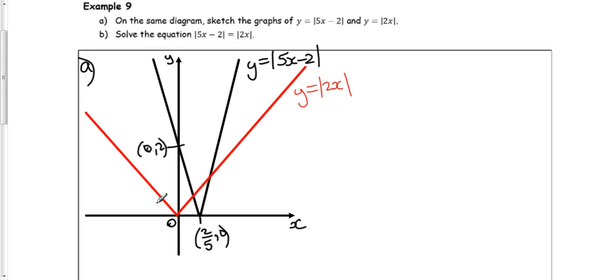And the reflected graphs, the red one has a gradient of minus 2. The black one has a gradient of minus 5. So that's part A done.